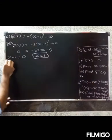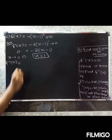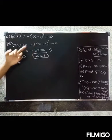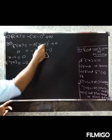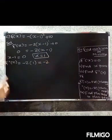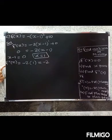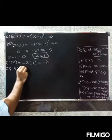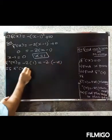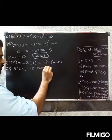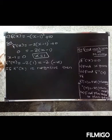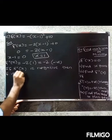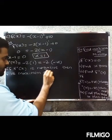Now find f''(x). Differentiating f'(x) = -2(x - 1) again: f''(x) = -2. Since f''(x) = -2 is negative, f(x) is maximum at x = 1. When f''(x) is negative, the function has a maximum at that point.